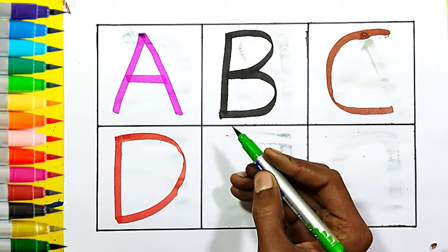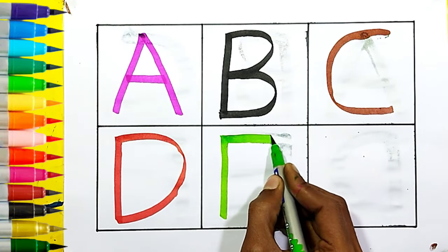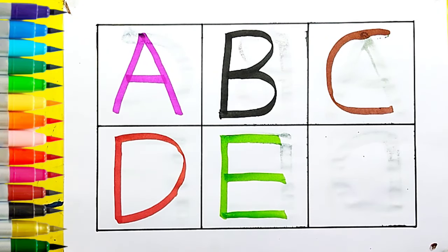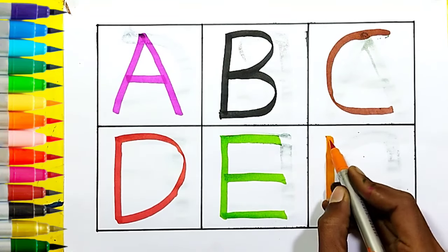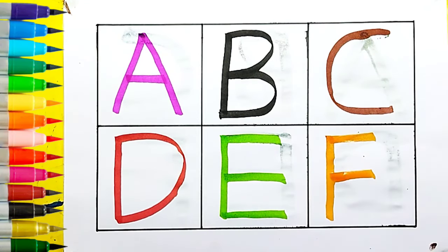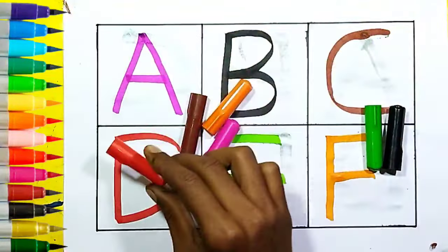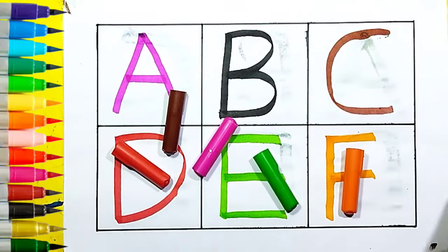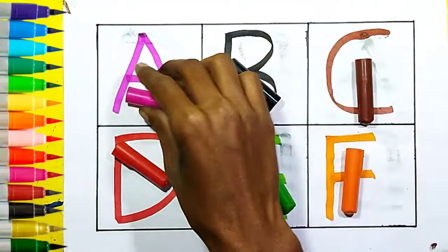E — elephant, green color. F — fish, orange color. Red, orange, green, red, orange, green, black, brown, pink.